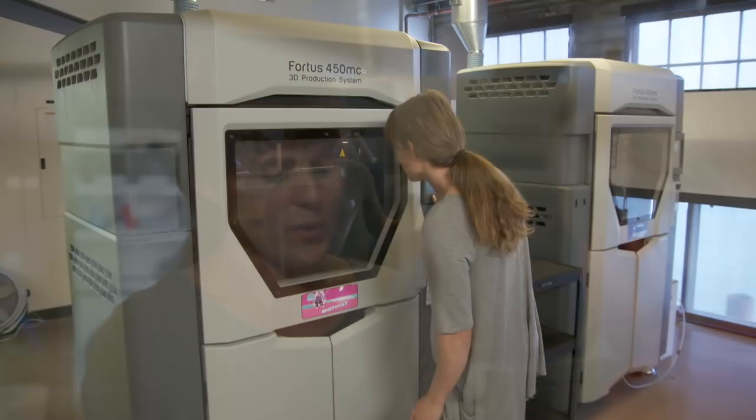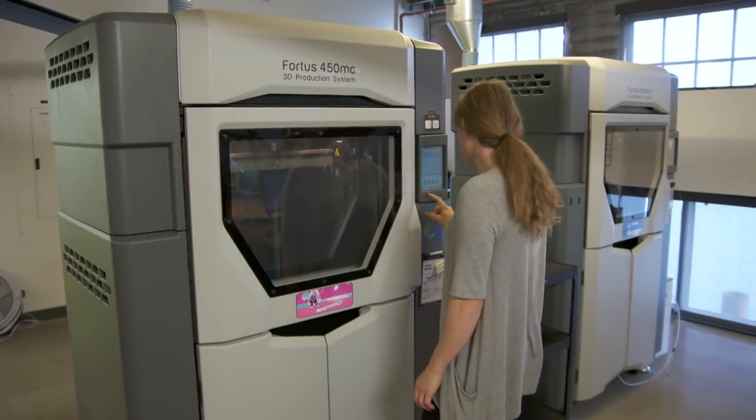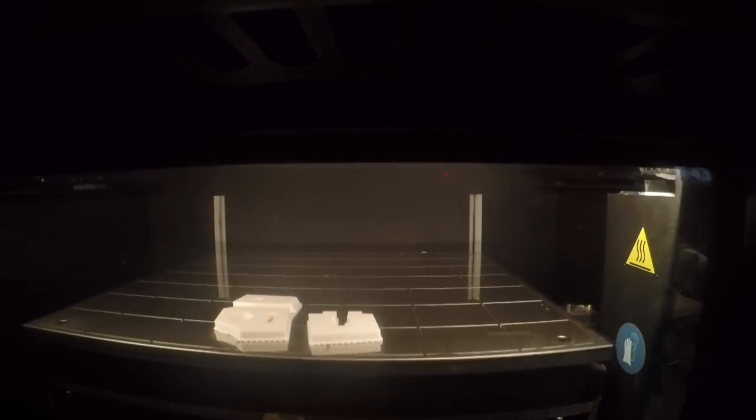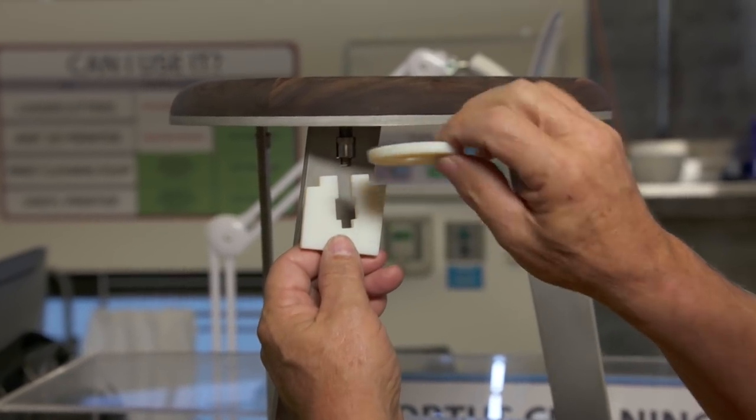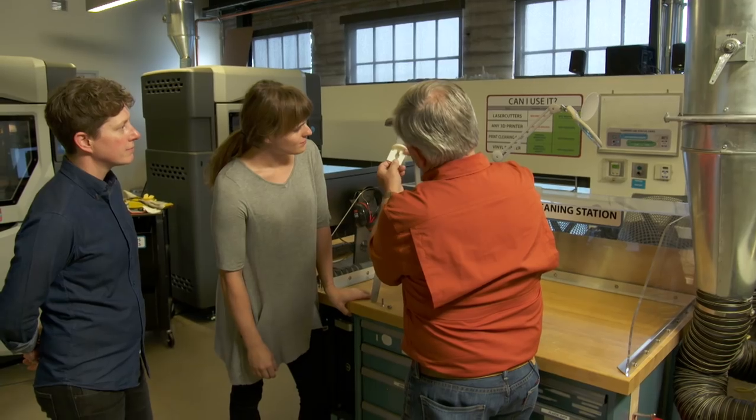So we've just 3D printed these on our FDM 3D printers. The way this works is it takes a filament of plastic, heats it up, and extrudes it as a series of layers. Once you get that out of the machine, you have your final part already printed, and it's the same part that you modeled in your 3D file. Oh, I see. So this represents the top of the leg, and this represents the top right here.